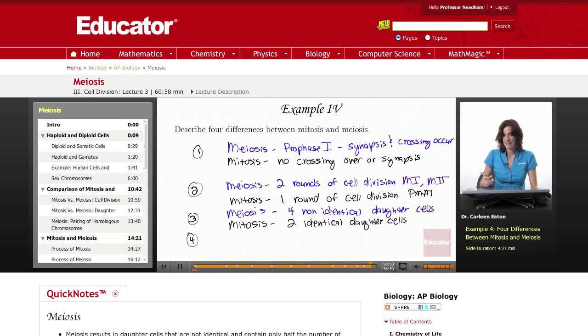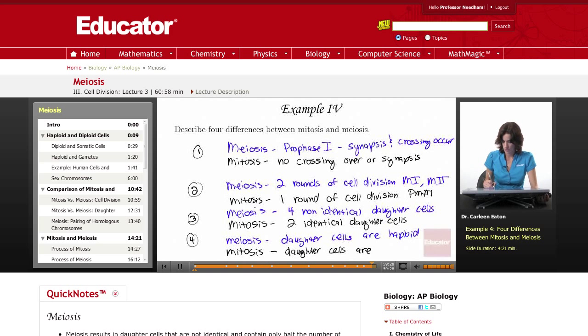And then a fourth difference. In meiosis, there is a reduction in chromosome number. The result is that the daughter cells are haploid. In mitosis, there is conservation of chromosome numbers. Therefore, the daughter cells, if the cell starts out diploid, will continue being diploid.